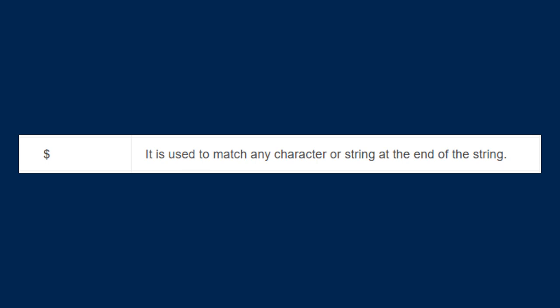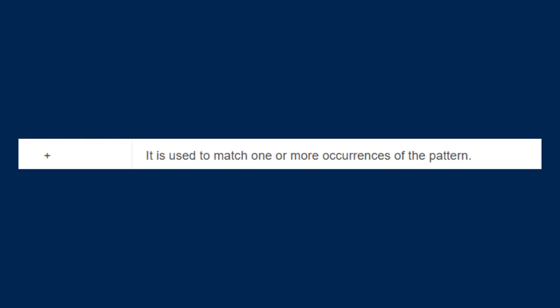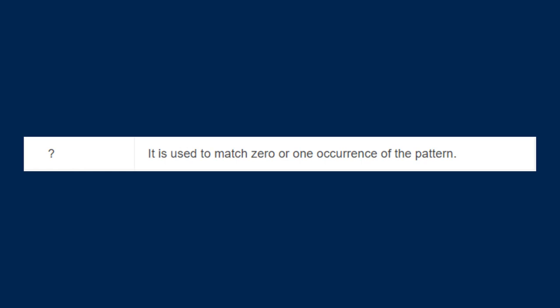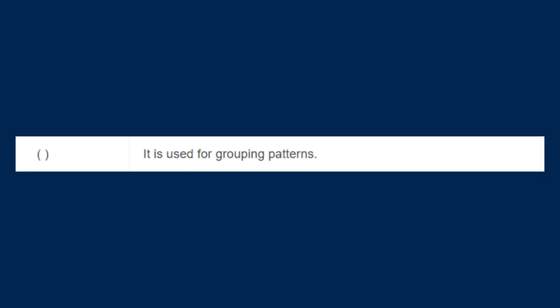The next character is the plus operator. It is used to match one or more occurrences of the pattern. Similarly, the question mark is used to match zero or one occurrence of the pattern. And next we have the parentheses brackets, which are used for grouping patterns. When you have to group a pattern, you will use these brackets.